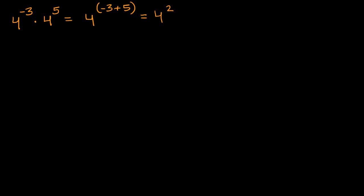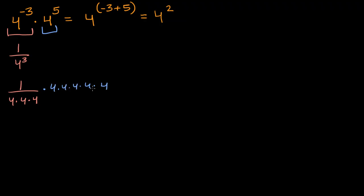But you can also think about why that actually makes sense. Four to the negative three power is one over four to the third power, or one over four times four times four. And then four to the fifth is five fours multiplied together: times four times four times four times four times four. When you multiply this out, you have five fours in the numerator and three fours in the denominator, so three of the denominator fours cancel with three in the numerator, and you're left with negative three plus five fours. This four times four is the same thing as four squared.